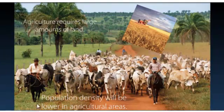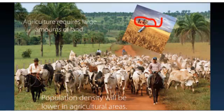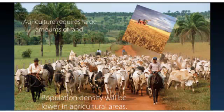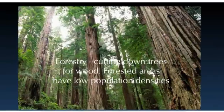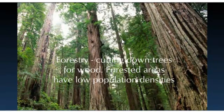Agriculture is basically farming and ranching. Farming requires a whole lot of land to grow crops, and ranching requires a whole lot of land to feed animals. Both of these areas are going to have low population densities because not too many people need to work on all this land. Also forestry — where there are forests, you can have forestry as an industry, basically cutting down trees.